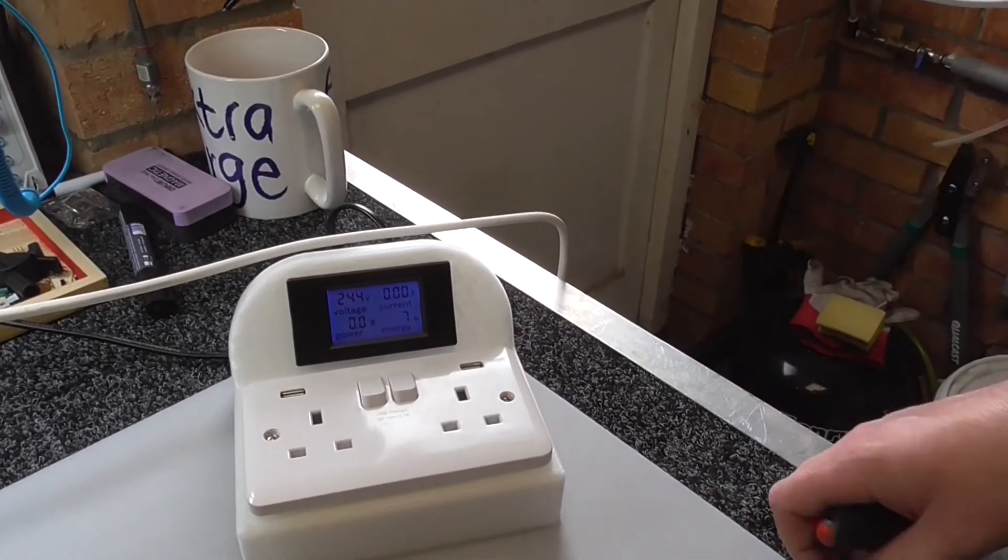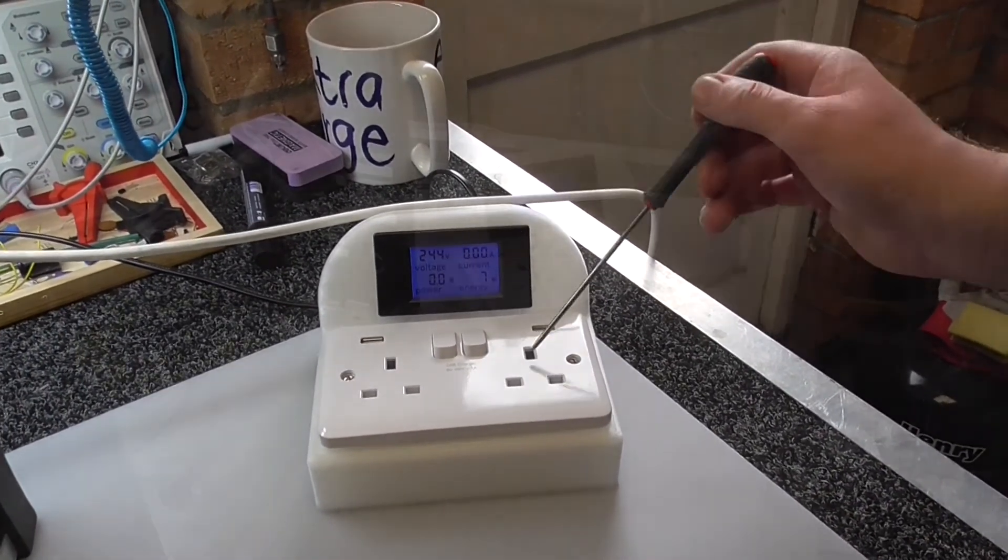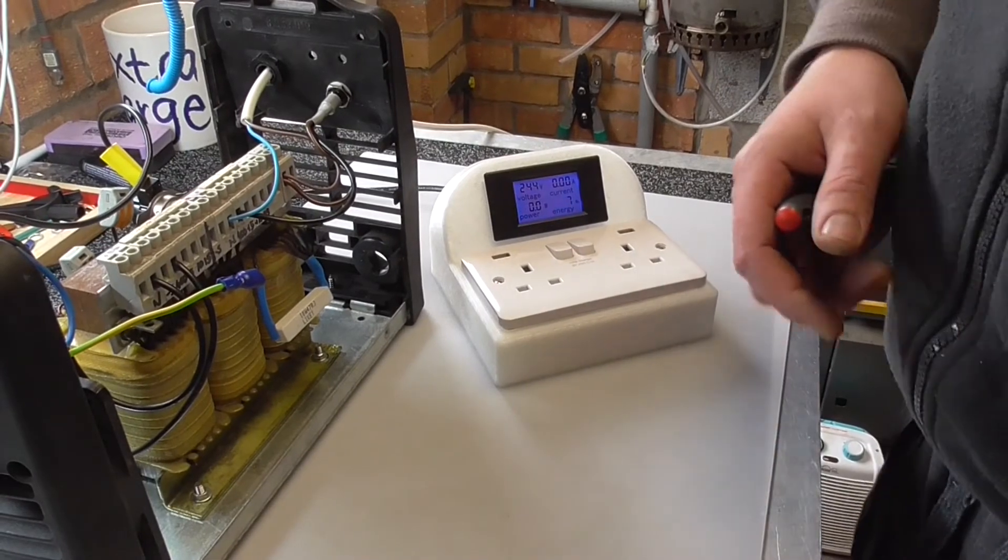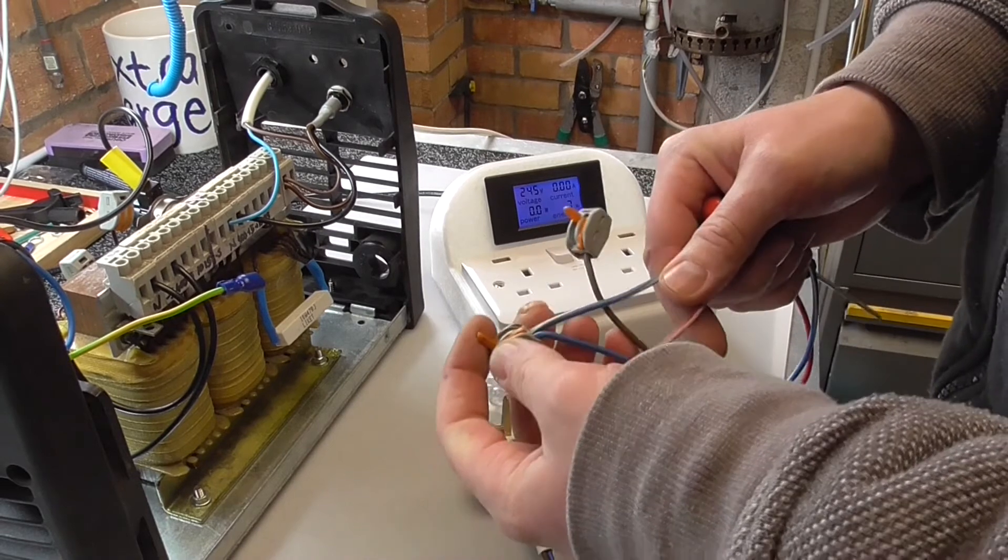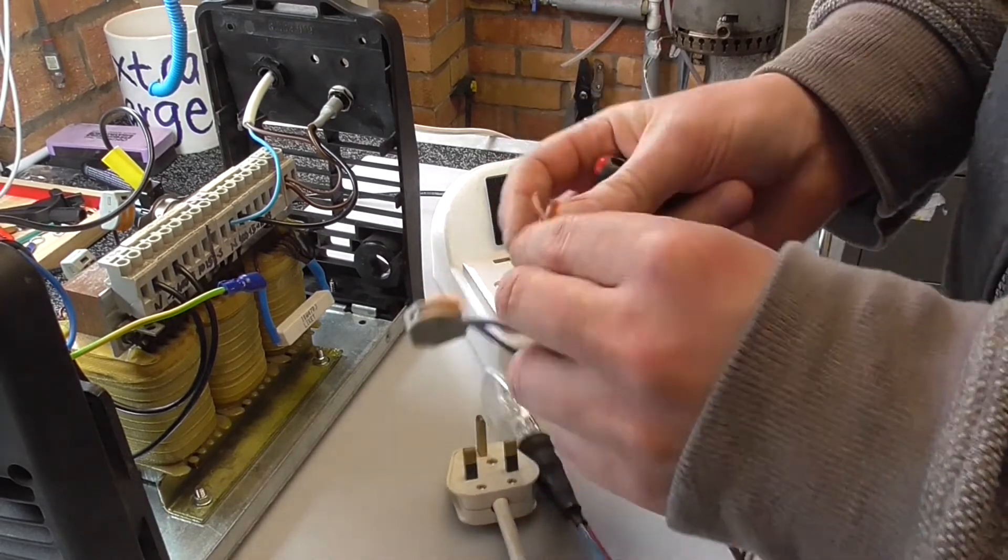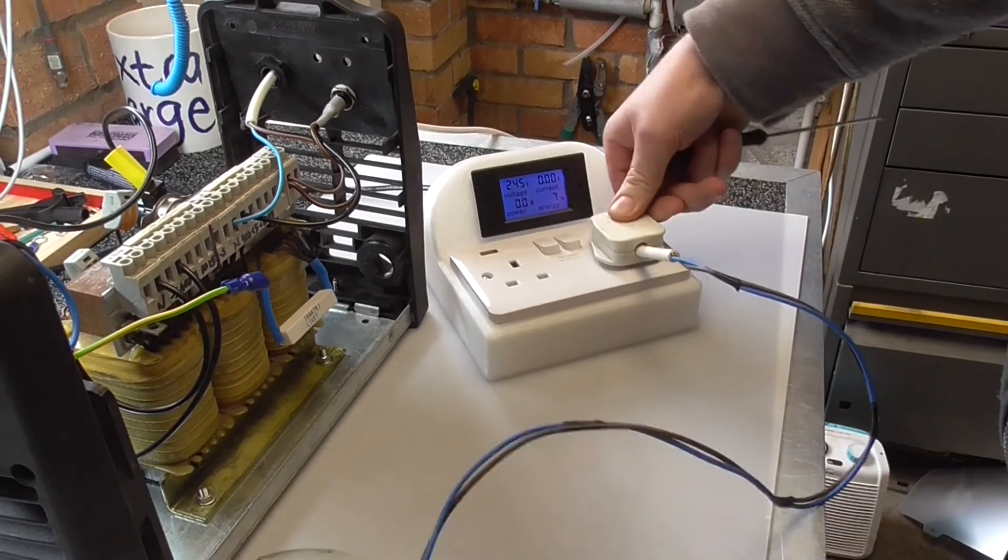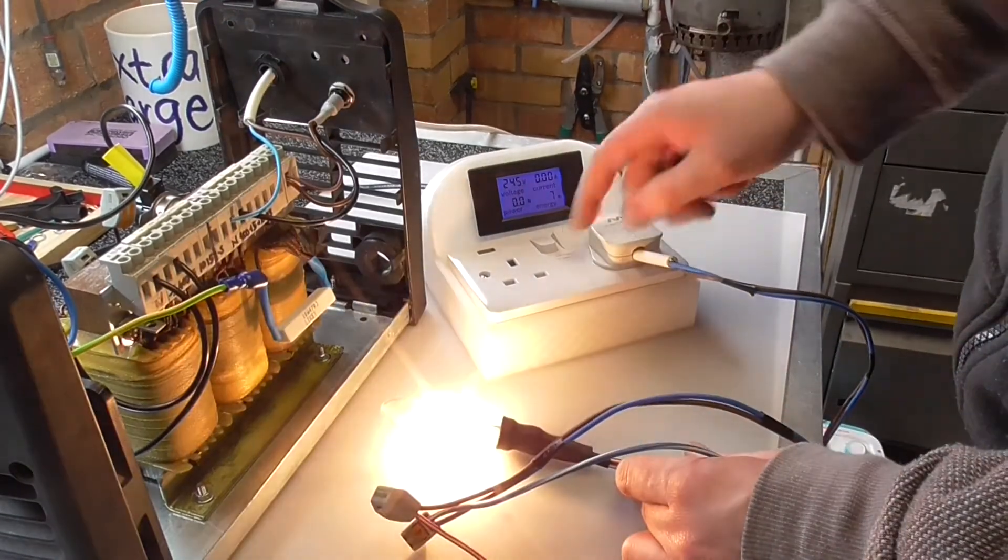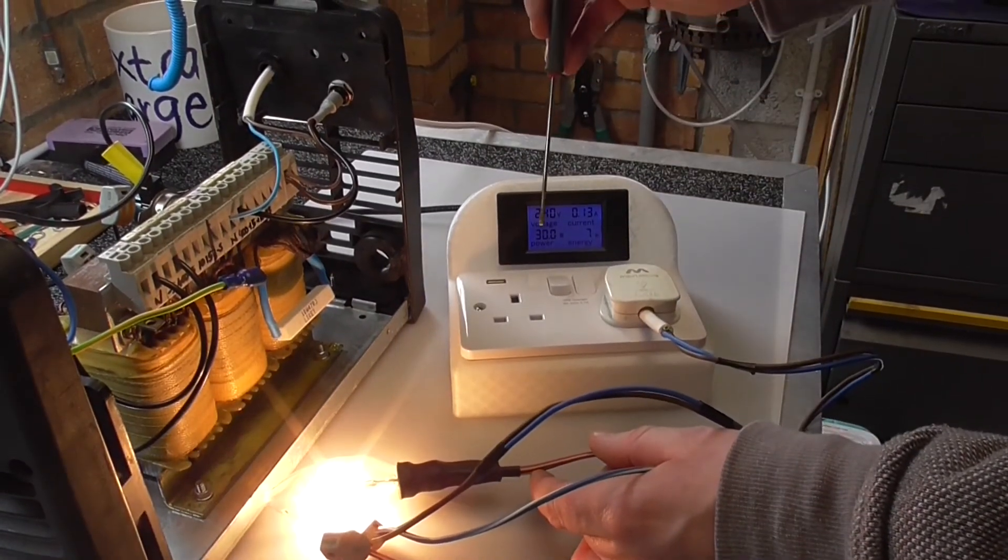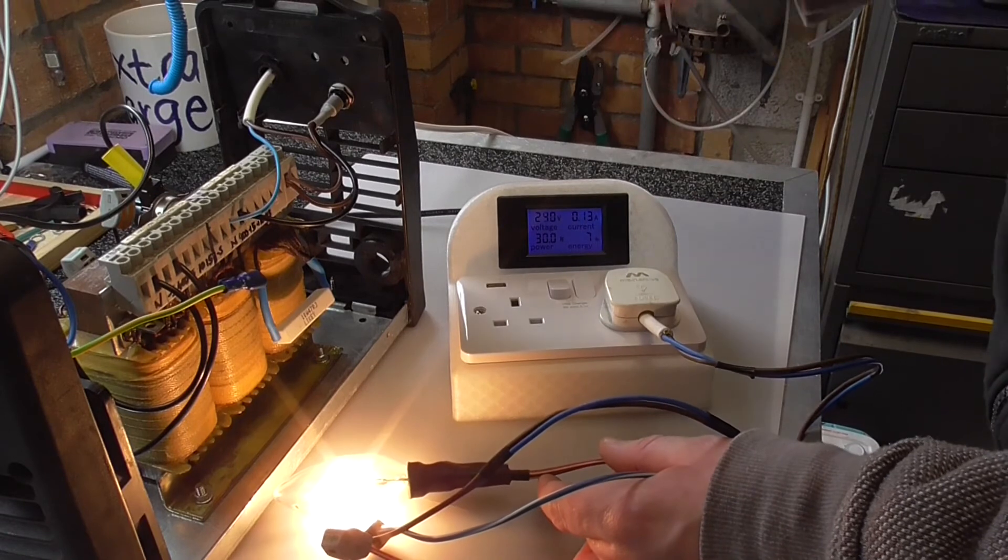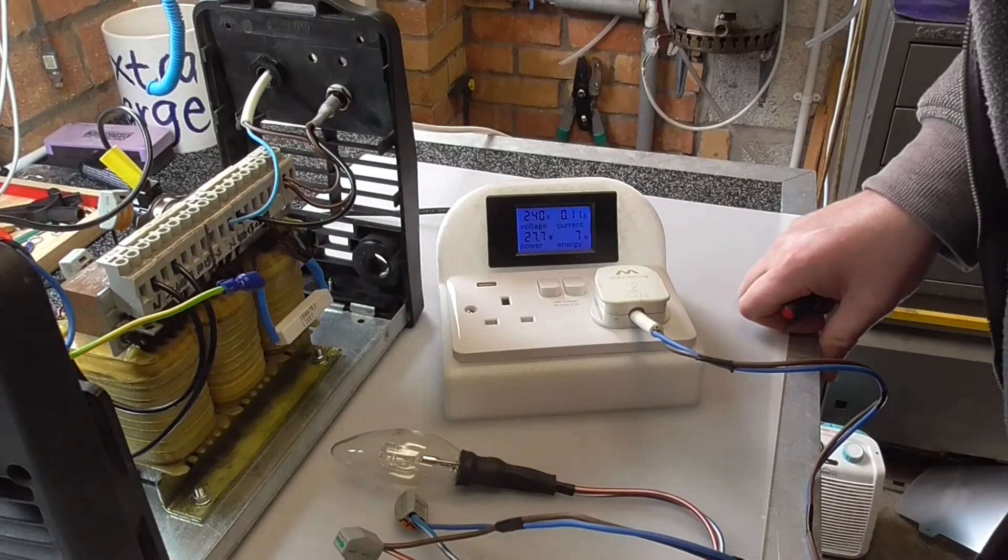And the socket installed, so you can see the voltage, the current. Let's see how it works. Connect the plug with the 30 watt bulb as before, and let's see if everything works. Plug in, start. There you go! So it shows 30 watts, 0.13 amps. Right, that's good.